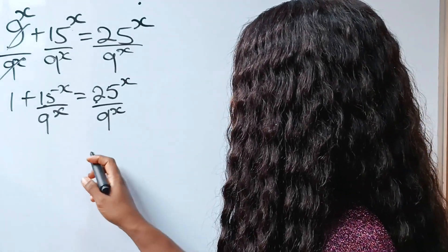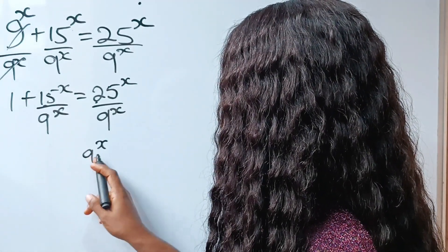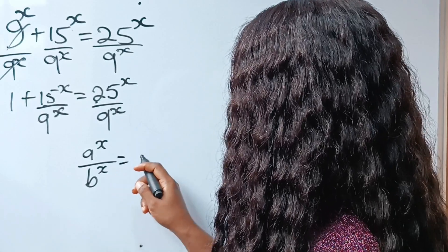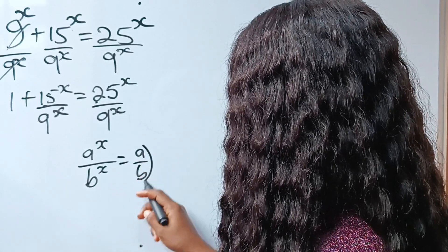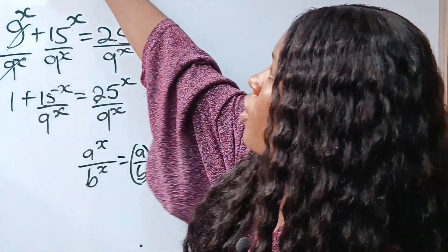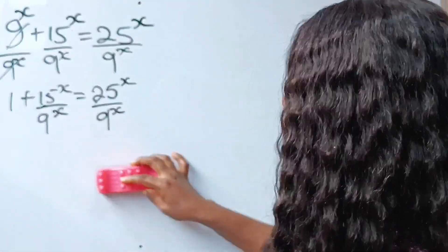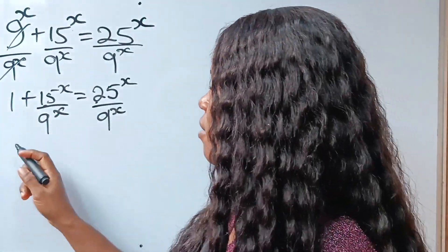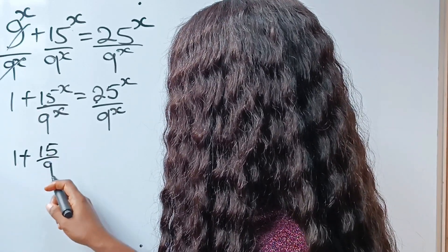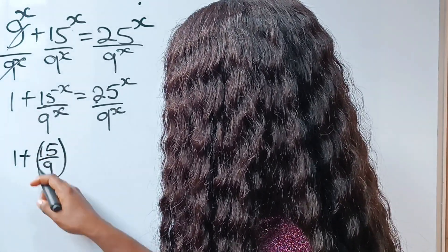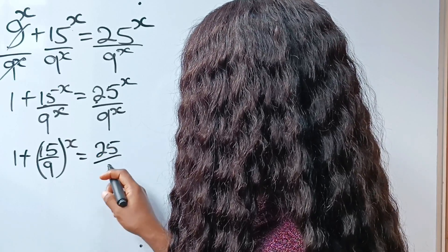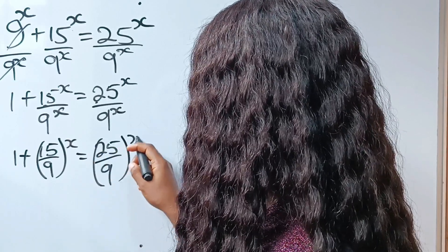Recall that a to the power of x divided by b to the power of x can be written as a divided by b, everything raised to the power of x. So we are going to apply that here. So when we do that, we'll have 1 plus 15 over 9 to the power of x is equal to 25 over 9 to the power of x.